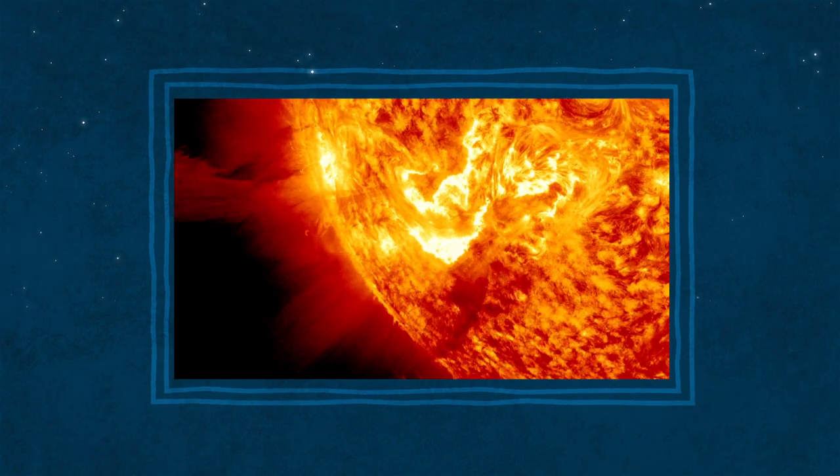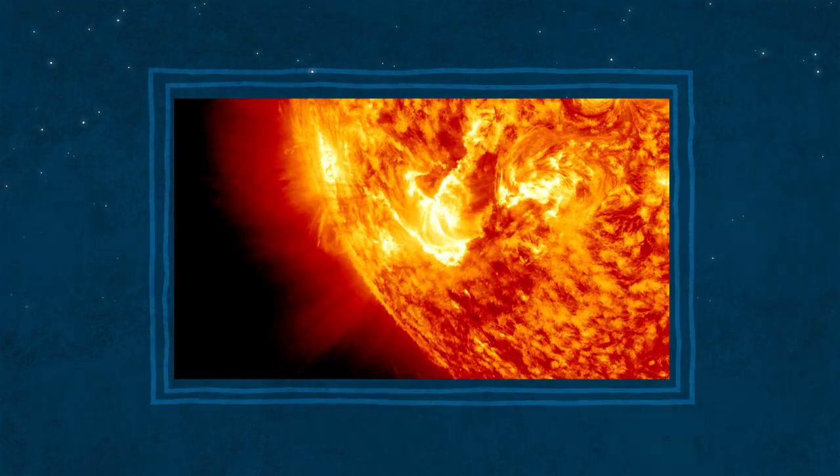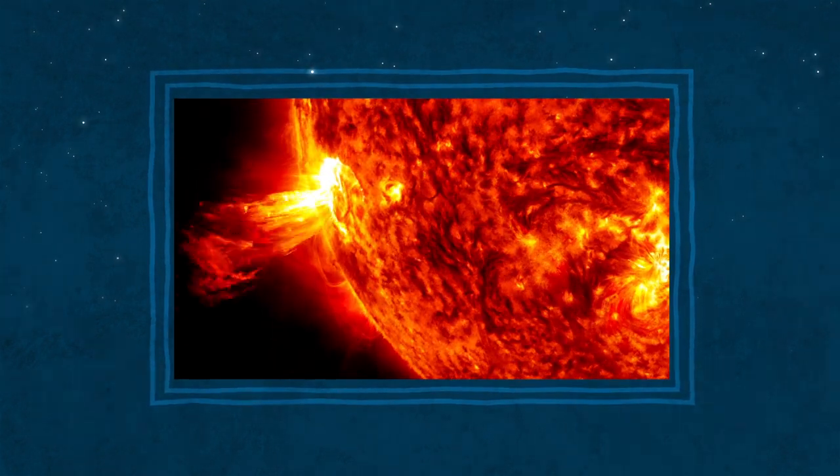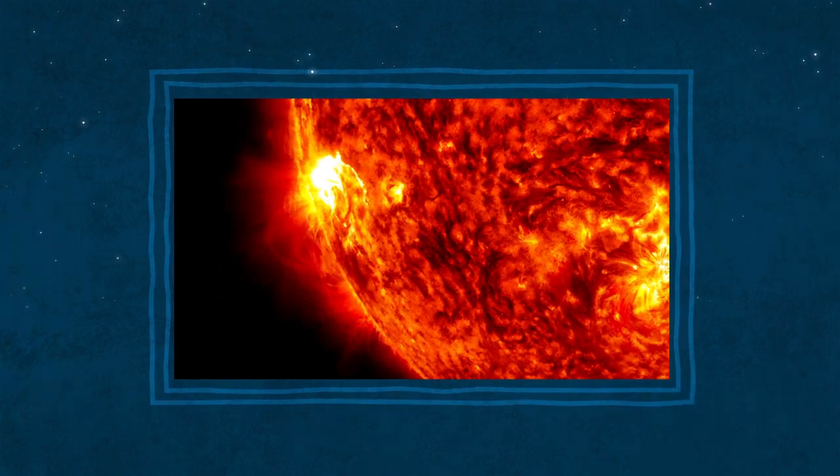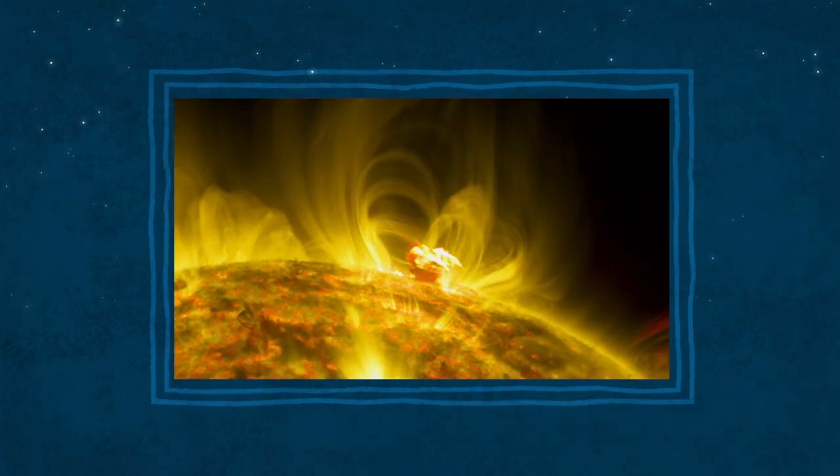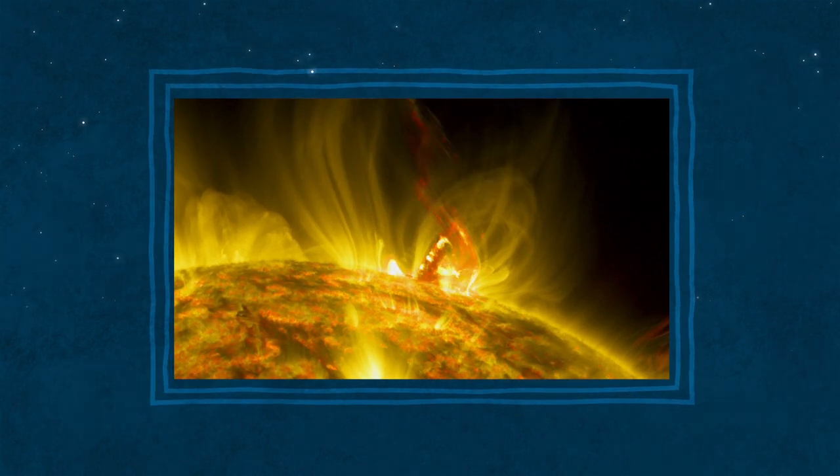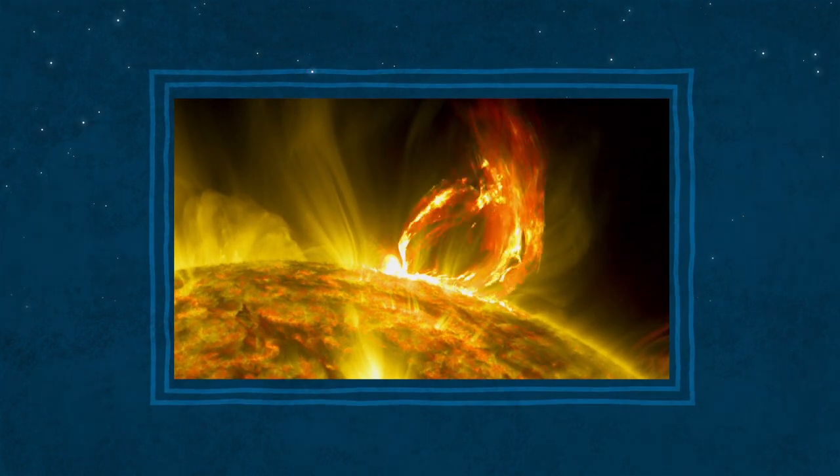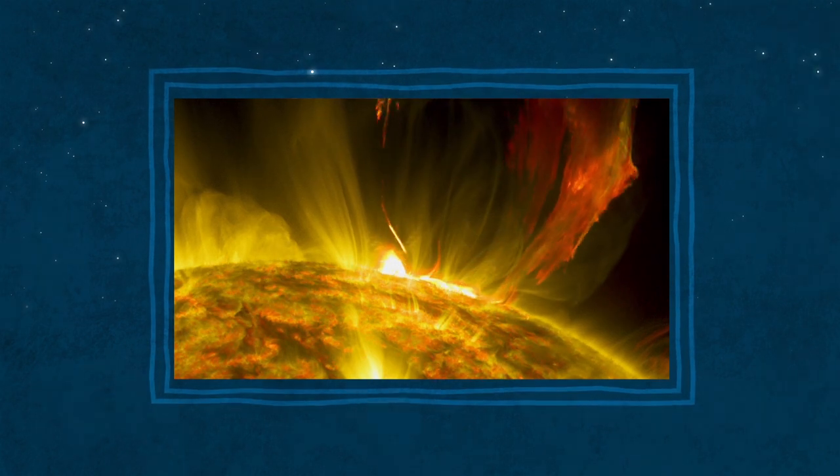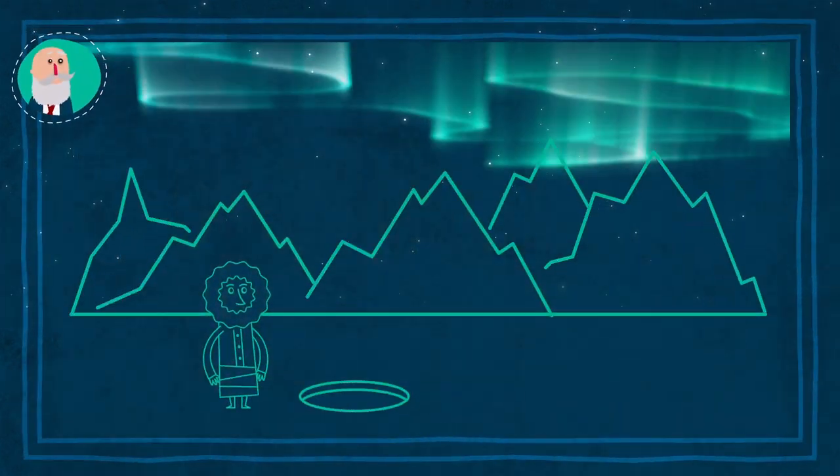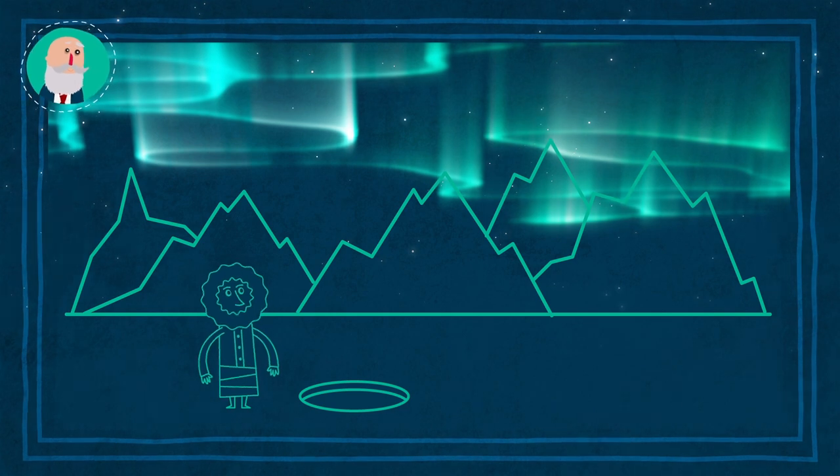They are the most energetic phenomena observed in the solar system, but last only a few minutes. Some flares create solar storms, gusts of charged particles that travel through space at high speed and may reach the Earth. When the particles enter the Earth's atmosphere near the poles, they produce auroras.